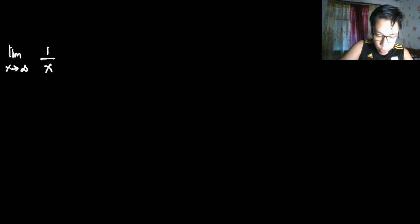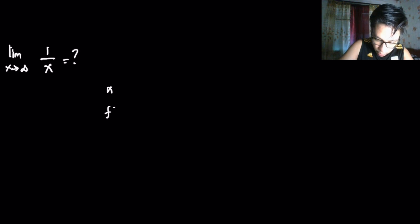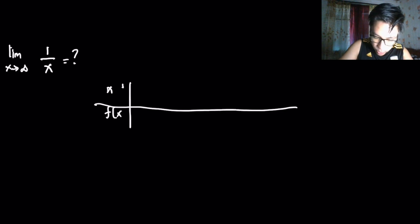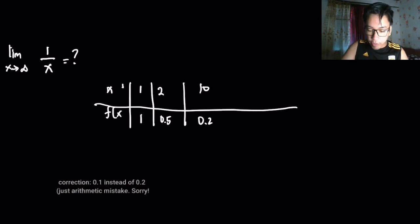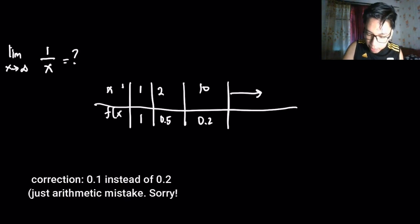Let's consider the function f(x) = 1/x. If we take the limit of 1/x as x approaches infinity, we want to know what that is. Consider a table of values: when x = 1, f(x) = 1; when x = 2, f(x) = 0.5; when x = 10, f(x) = 0.2; and so on.